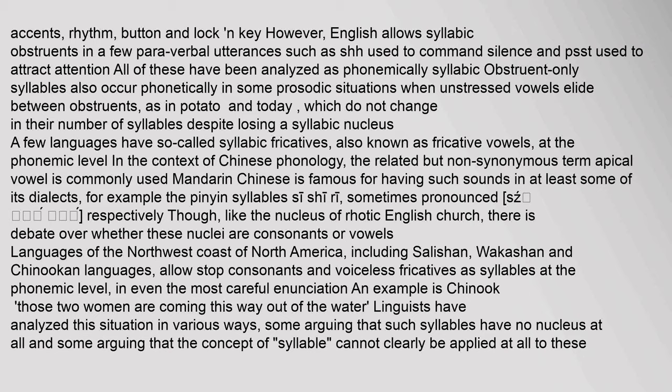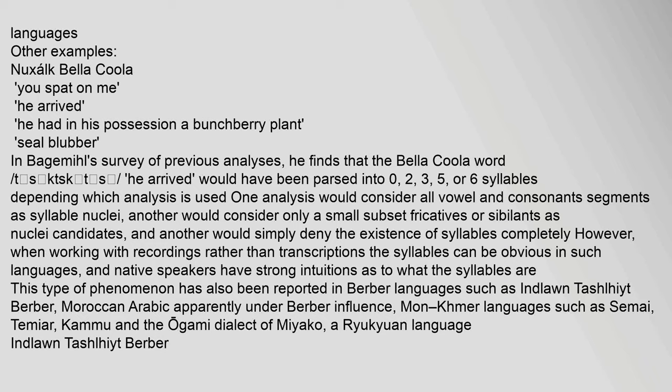Languages of the northwest coast of North America, including Salishan, Wakashan, and Chinookan languages, allow stop consonants and voiceless fricatives as syllables at the phonemic level. Linguists have analyzed this situation in various ways — some arguing that such syllables have no nucleus at all, and some arguing that the concept of syllable cannot clearly be applied to these languages. In Bagemil's survey of previous analyses, the Bella Coola word 'tsktskts' (he arrived) would have been parsed into zero, two, three, five, or six syllables depending on which analysis is used.